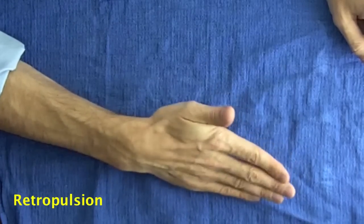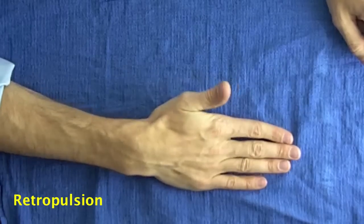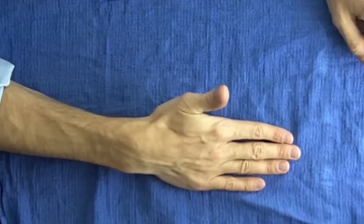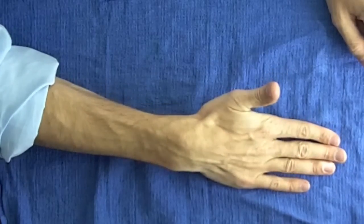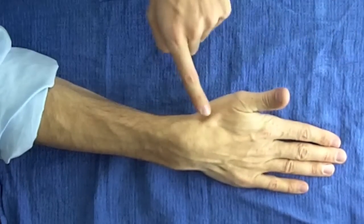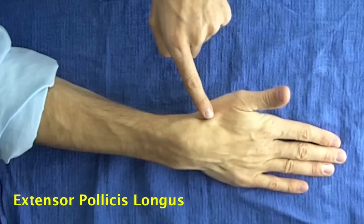Retropulsion is the technical term for lifting the thumb off a table while keeping the hand flat. This motion is created by the extensor pollicis longus tendon.